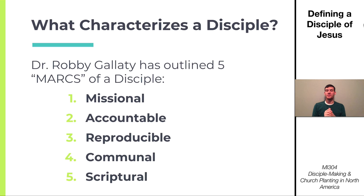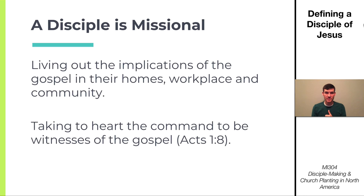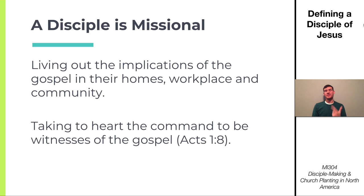Here are the five marks or characteristics of a disciple: they're missional, accountable, reproducible, communal, and scriptural. First, a disciple is missional — living out the implications of the gospel in their home, workplace, and community. They take to heart the command to be witnesses from Acts 1:8, both demonstrating and declaring the gospel of Jesus Christ, living as a missionary anywhere God places them.